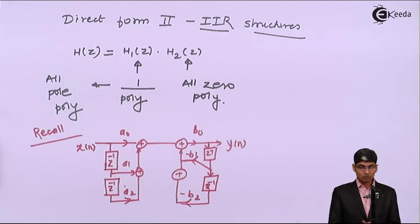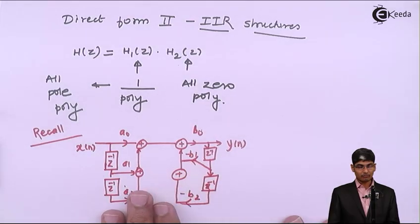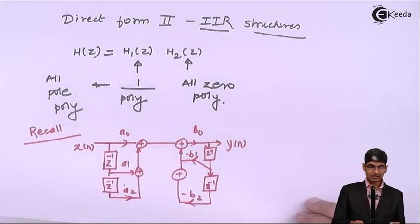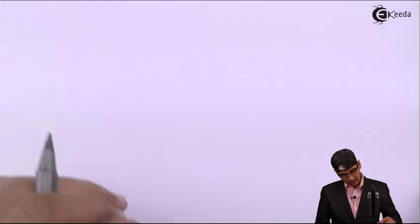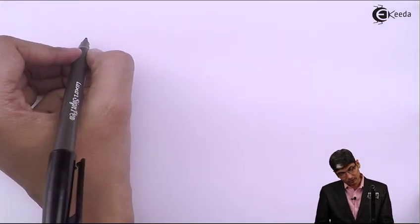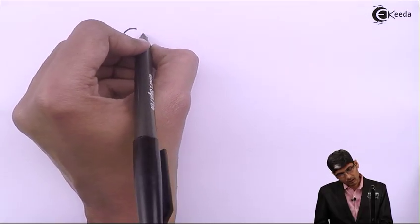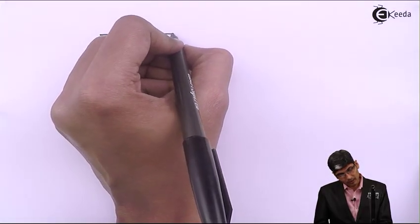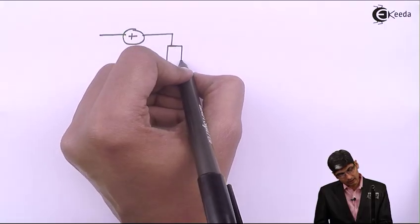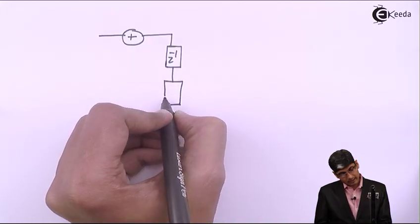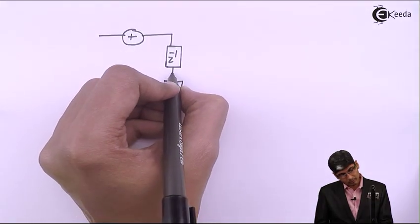Now in Direct Form 2, the roles have been shifted. I will bring the first structure and place it on the other side, and bring the second structure to this side, changing the roles. Going from X(N) to Y(N), there will first be an addition block and then Z-inverse terms, with the Z-inverse going backwards.